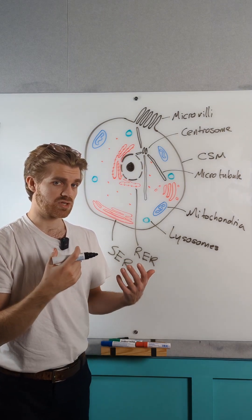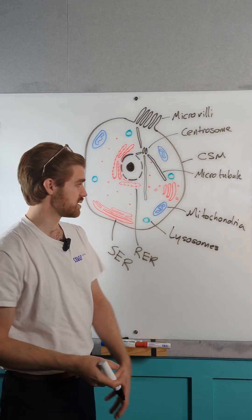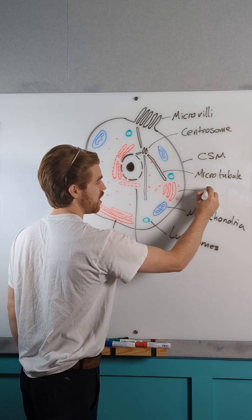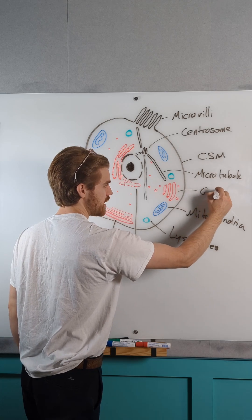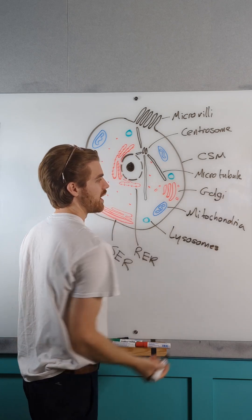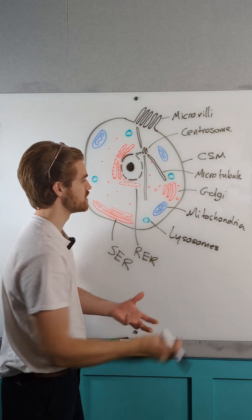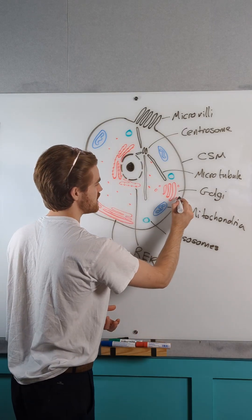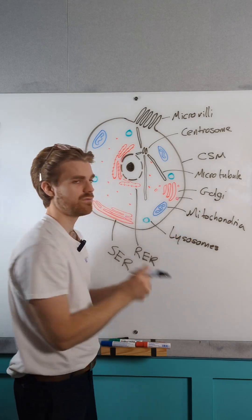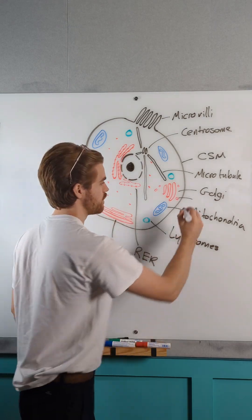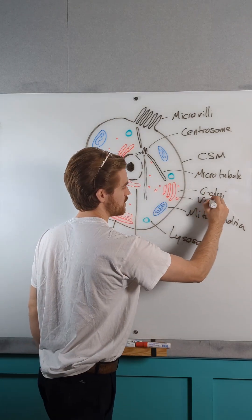As well as our smooth endoplasmic reticulum, we've also got over here our Golgi apparatus. I can recognise this as my Golgi apparatus because we can see we have these little vesicles pinching off that Golgi.